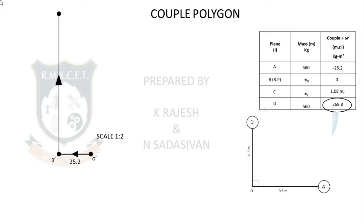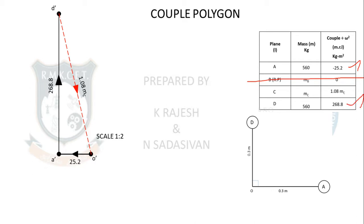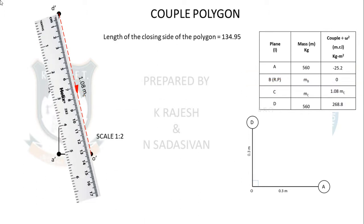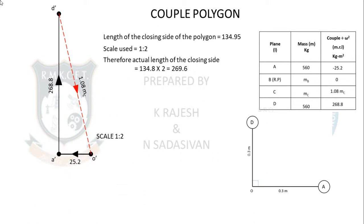Draw the line vertically upward (positive). Now close the polygon. The remaining side represents 1.08 MC. Measure the length — it comes to approximately 134.95 mm. Apply the scale conversion (multiply by 2): 134.95 × 2 ÷ 1.08 gives MC ≈ 249 kg. The couple for C is 269.6 kg·m². Remember to reverse the scale when converting back. Therefore, mass C = 249 kg.